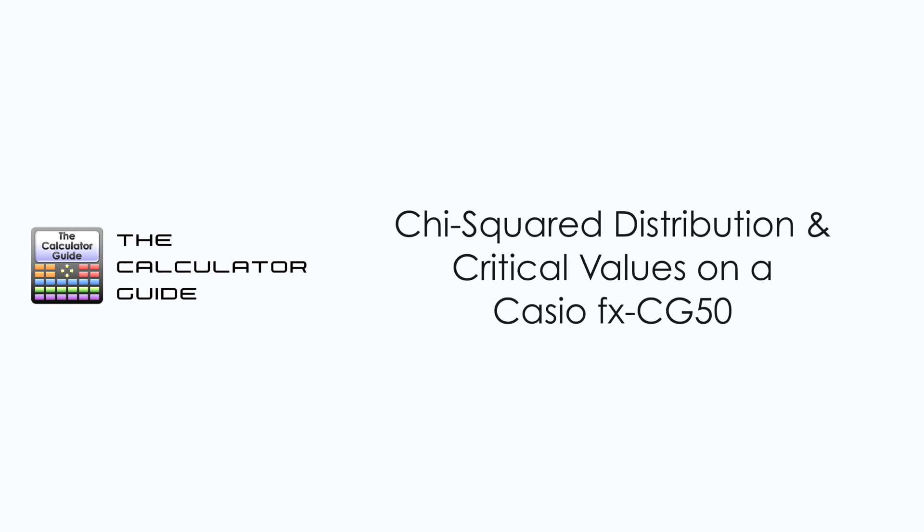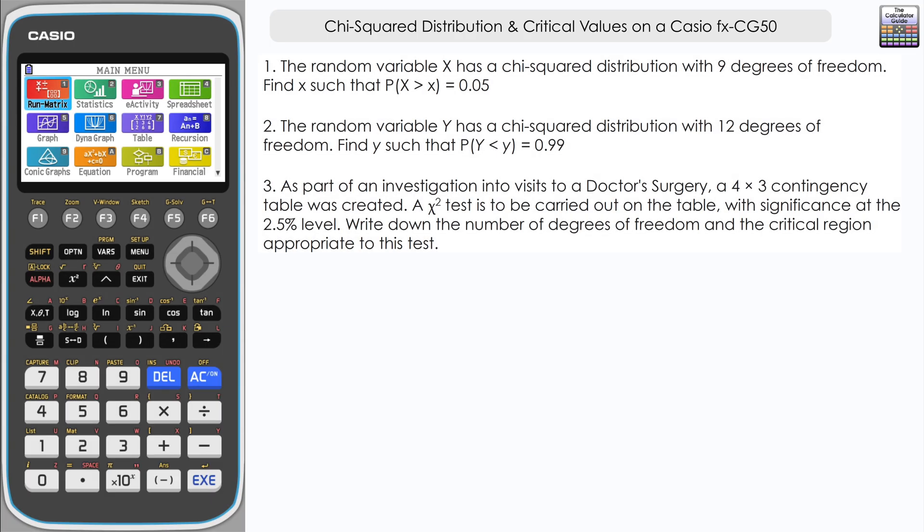Hello and welcome to the calculator guide video on chi-squared distribution and critical values on a Casio FX-CG50. This video shows you how to use the calculator rather than the chi-squared distribution tables that you might see in a textbook, formula booklet, or exam. Your calculator can produce those values for you.